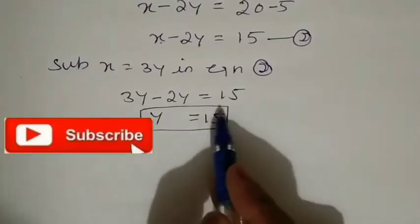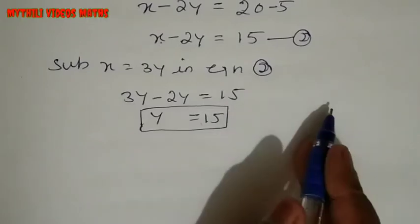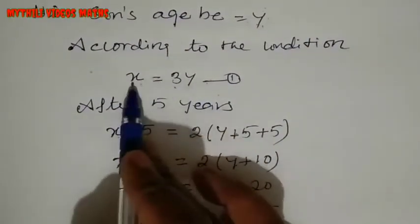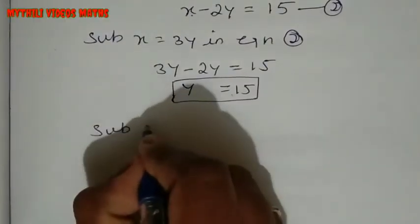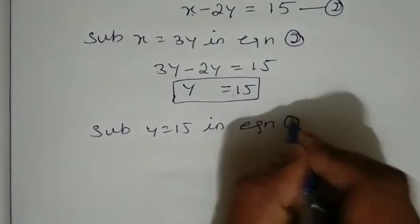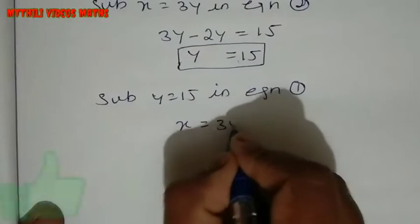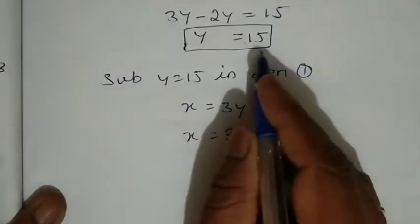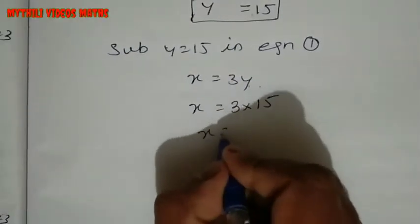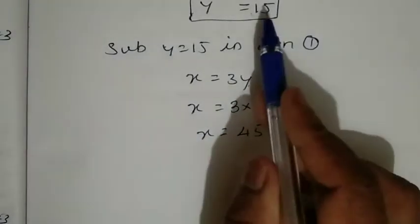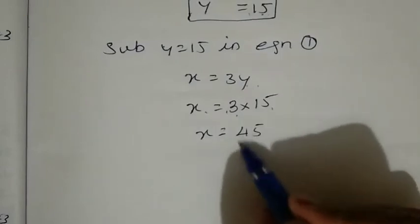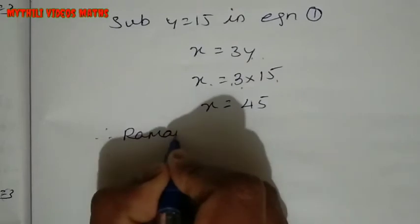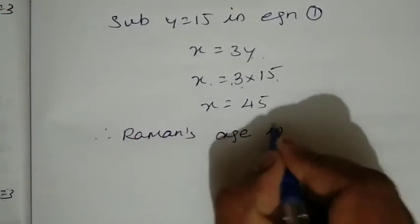Now substitute Y equal to 15 into Equation 1: X equals 3Y equals 3 into 15. Therefore Raman's age X equals 45.